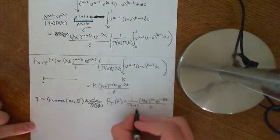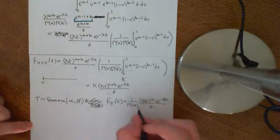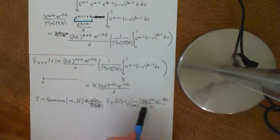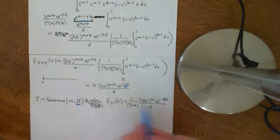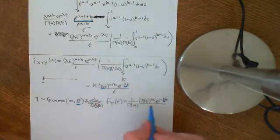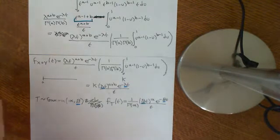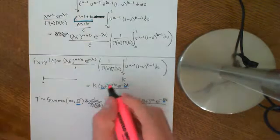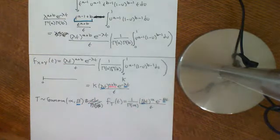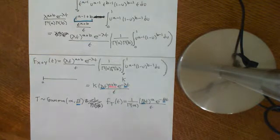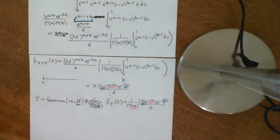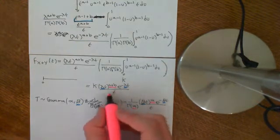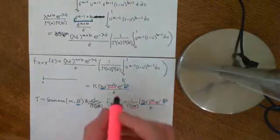This thing out the front is just a constant — it's what makes this integrate to 1. Apart from that, this looks extremely like the expression we derived. Basically I'm letting λ take the place of β, and letting a+b take the place of α. a and b are just positive real numbers; you add them together and get another positive real number. The t is perfectly positioned as well, so this is a gamma distribution.